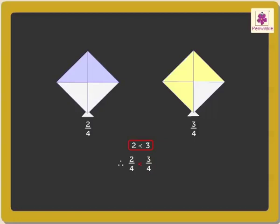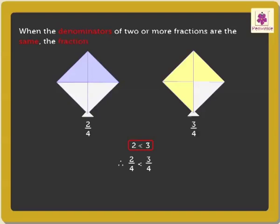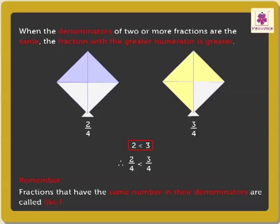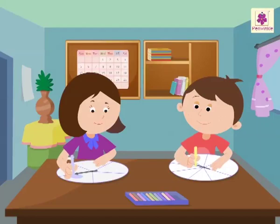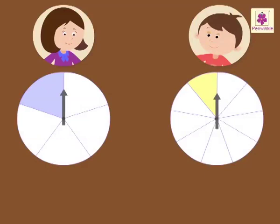So here, two is less than three. Hence we can say that two-fourth is less than three-fourth, or three-fourth is greater than two-fourth. That is, when the denominators of two or more fractions are the same, the fraction with the greater numerator is greater. Remember, fractions that have the same number in their denominators are called like fractions.